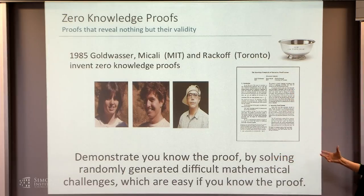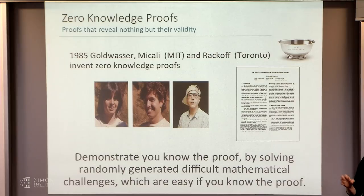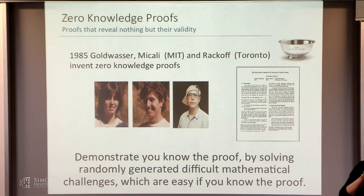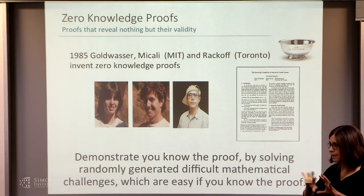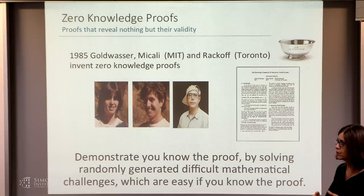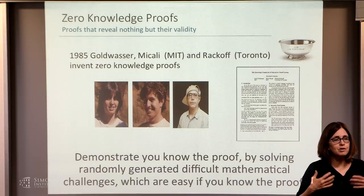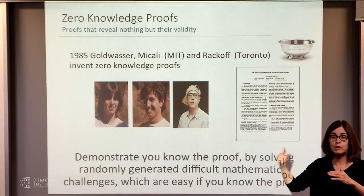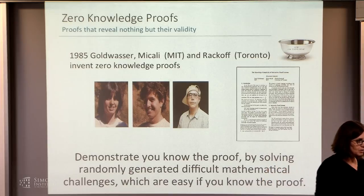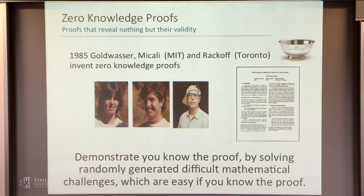Zero knowledge enables you to prove you know something while being the only one who knows it. You generate a password and deposit it in some public form that others can't derive the password from. This comes from the paper 'The Knowledge Complexity of Interactive Proof Systems' by Goldwasser, Micali, and Rackoff. The verifier (Amazon) generates randomly difficult mathematical challenges that only the person who knows the password or proof can solve — each login generates fresh challenges, so an observer can't replay previous answers.